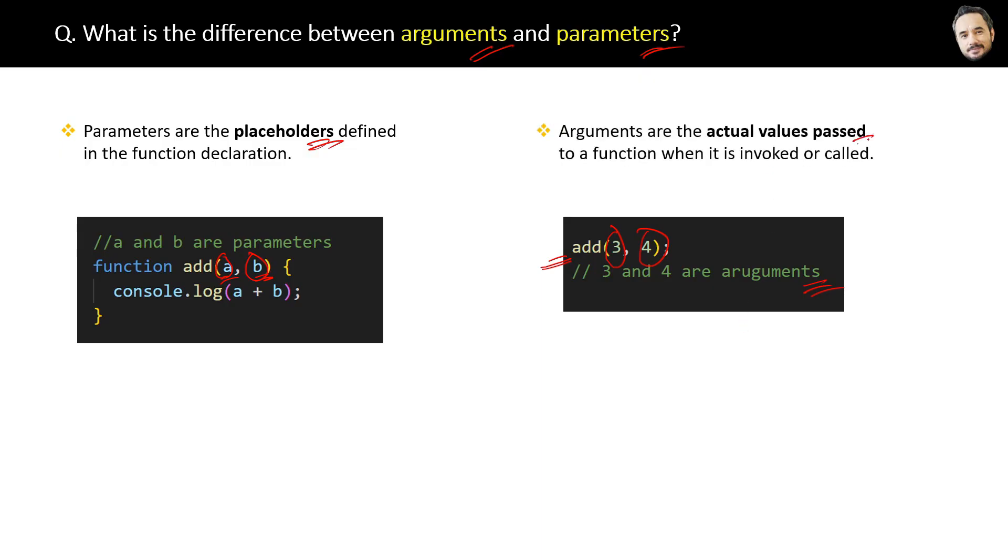Arguments are the actual values passed to a function when it is called or invoked. So that is the difference.